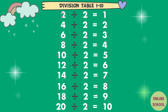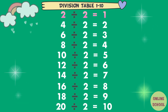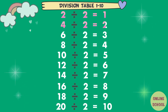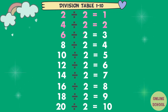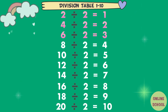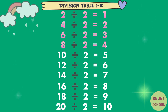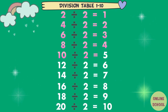Divided by 2. 2 divided by 2 equals 1. 4 divided by 2 equals 2. 6 divided by 2 equals 3. 8 divided by 2 equals 4. 10 divided by 2 equals 5.